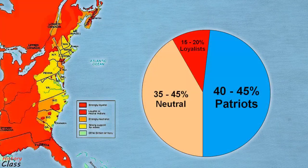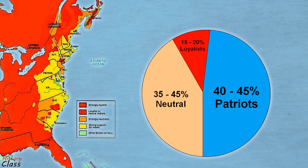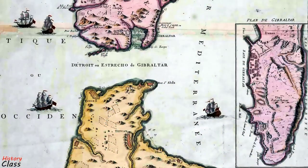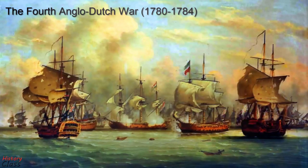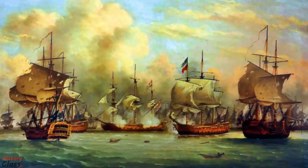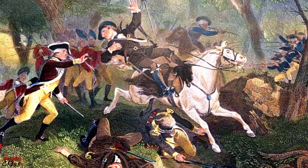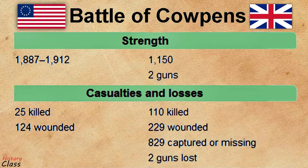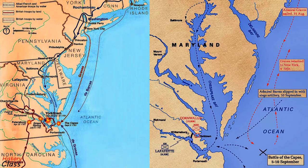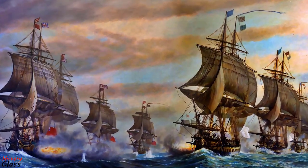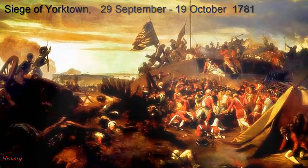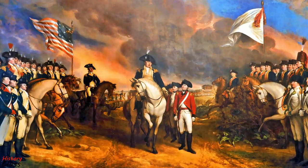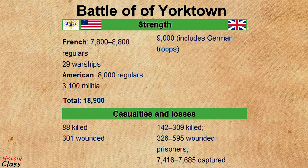British strategy depended upon an uprising of large numbers of armed loyalists, but too few came forward. In 1779, Spain joined the war as an ally of France under the Pacte de Famille, intending to capture Gibraltar and British colonies in the Caribbean. Britain also declared war on the Dutch Republic in December 1780. In 1781, after the British and their allies had suffered two decisive defeats at Kings Mountain in October 1780 and Cowpens in January 1781, Cornwallis retreated to Virginia intending on evacuation. A decisive French naval victory in September deprived the British of an escape route. A joint Franco-American army led by Rochambeau and Washington laid siege to the British forces at Yorktown. With no sign of relief and the situation untenable, Cornwallis surrendered in October 1781 and some 8,000 soldiers were taken prisoner.